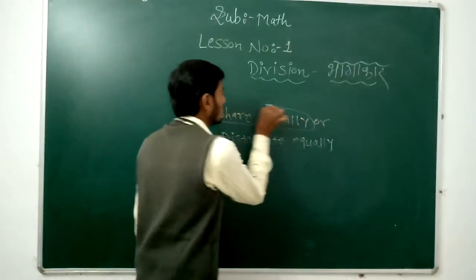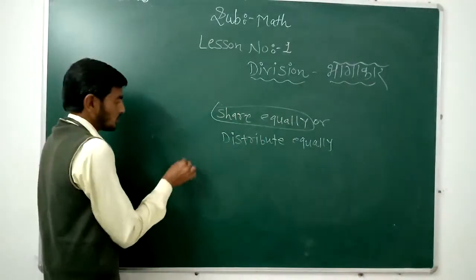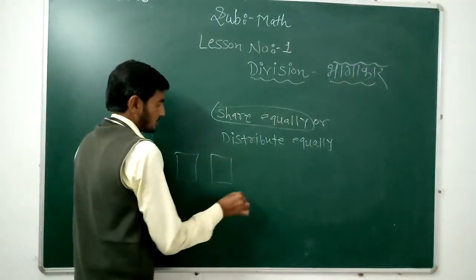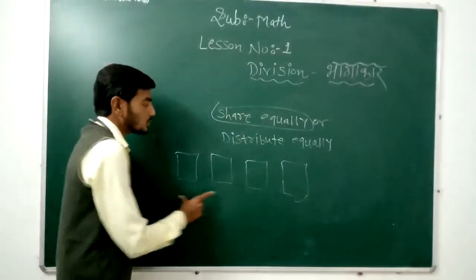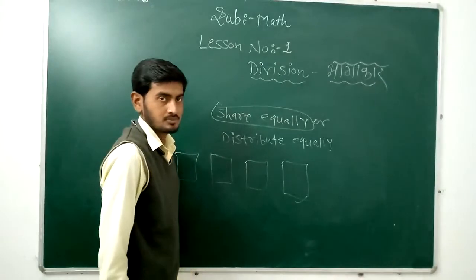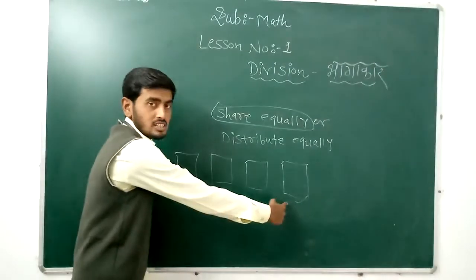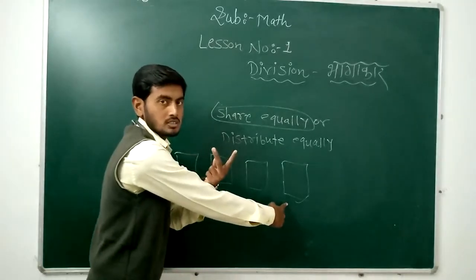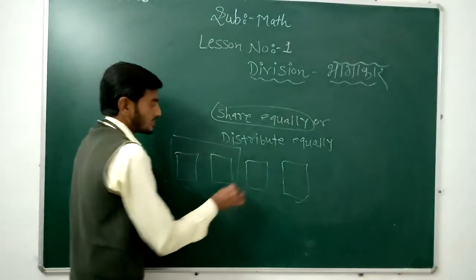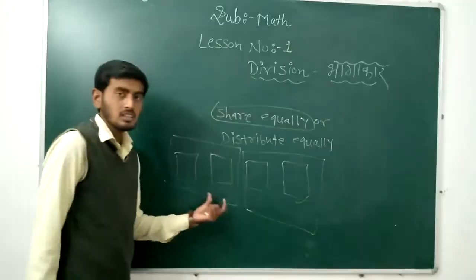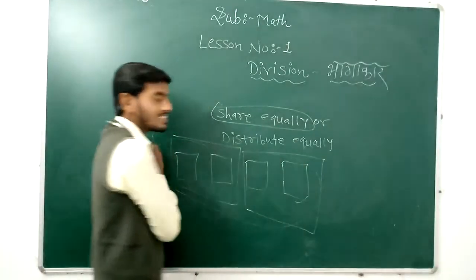For example, suppose we have four chocolates. I want to distribute these four chocolates between two students. Each one gets two chocolates — first student gets two chocolates and the second student gets two chocolates. That is known as division.